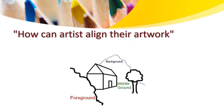How can artists align their artwork? You are learning about how artists align their artwork on a paper. We have three alignments: one is a background, the other one is a middle ground, and the other one is a foreground. The three alignments help you organize your paper.